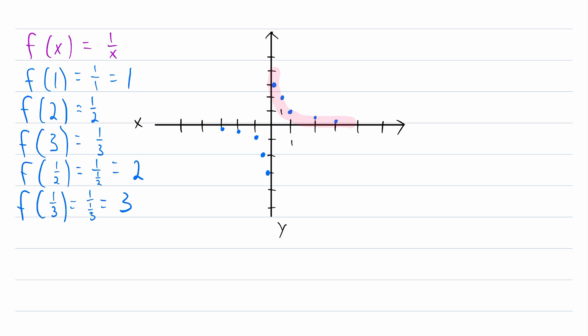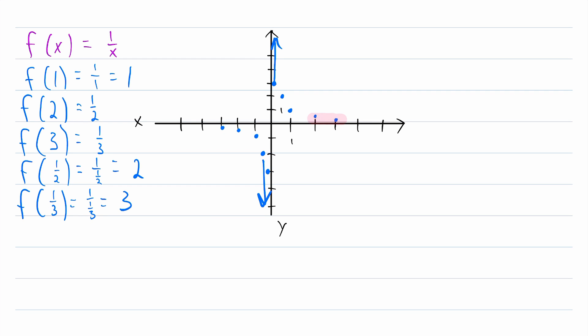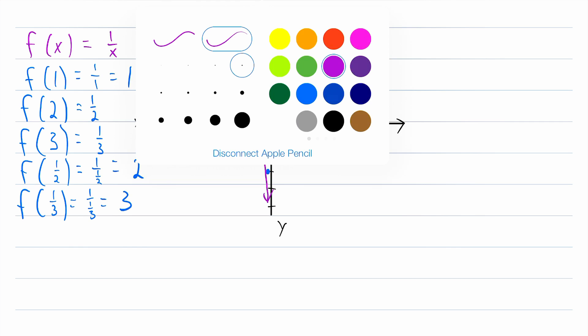Now we can start to see the shape of this graph coming to life. We see that as the absolute value of x gets smaller, as it gets closer and closer to 0 from the positive or negative direction, the y values are getting greater and greater. When x is positive and getting smaller, the y values are approaching positive infinity. When x is negative and getting smaller, the y values are approaching negative infinity.